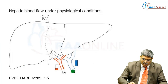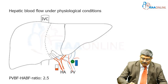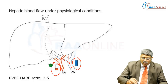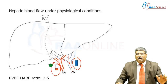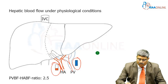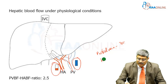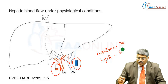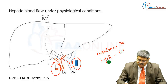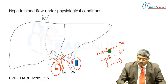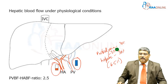Here you can see the portal vein blood flow is almost twice that of the hepatic artery blood flow. Normally, the portal vein brings about 70% of the hepatic blood flow and the hepatic artery is around 30%, or one third. But oxygenation-wise, the hepatic artery carries about 65% and the portal vein carries only 35% of the oxygenation to the liver.